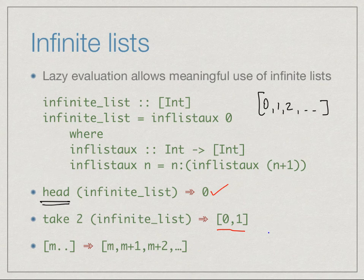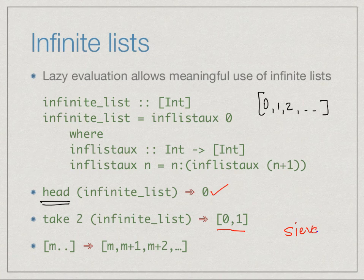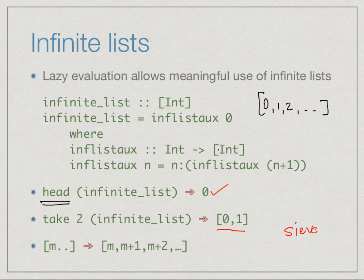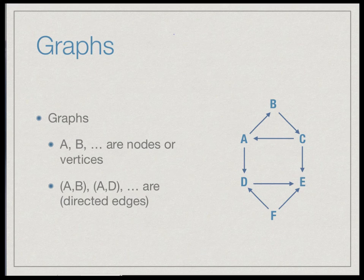So far we saw only one curiosity involving this: an implementation of the Sieve of Eratosthenes for computing all the primes. Today let us look at a couple of examples which illustrate why it is sometimes convenient to think in terms of functions which generate unbounded lists, rather than worrying about how to make them bounded. Our first example comes from graph theory.